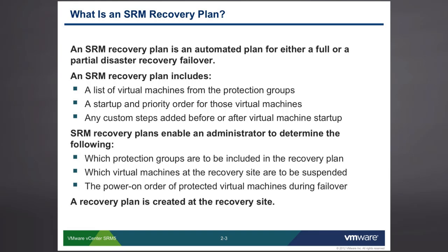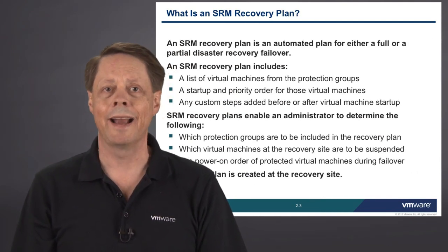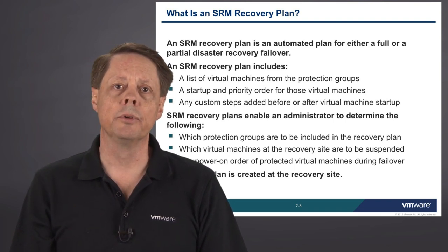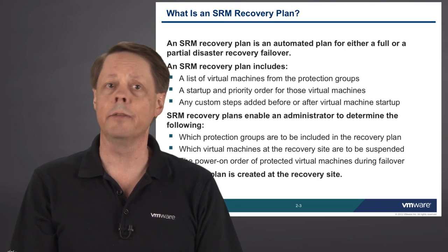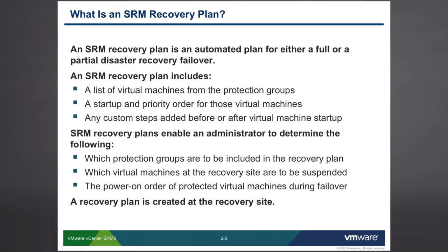What is contained within the recovery plan is nothing more than a list of which virtual machines are going to be failed over, and that's typically based on which protection groups they belong to. So you'll include the protection groups into your recovery plan. You can then declare a startup priority order for those virtual machines, as well as some dependencies. For example, in a three-tier application with a web, application server, and database server, it could be reasonable for the database server to start first, and not even try to start the application server until the database server has finished starting.